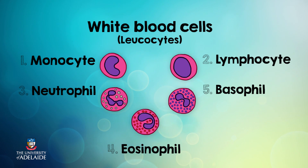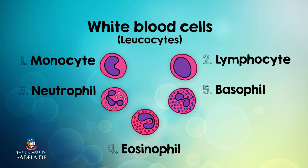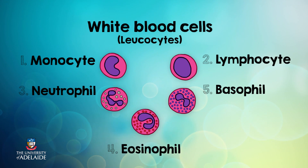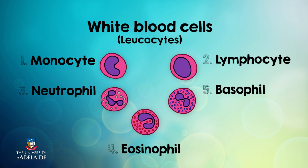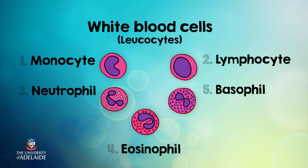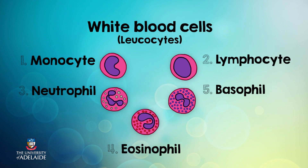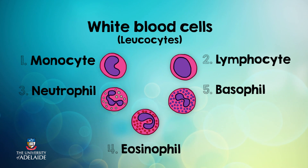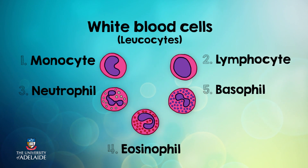The last subtype of white blood cells — those whose name ends in 'phil' — include neutrophils and eosinophils, which are phagocytic. The basophils initiate inflammation through the release of histamine.